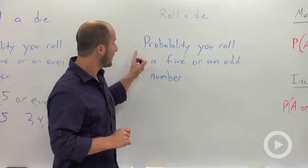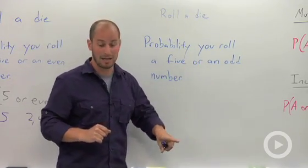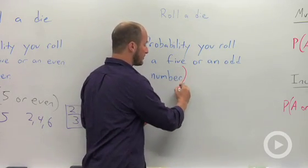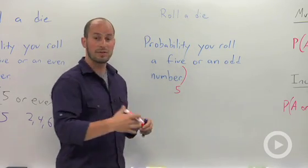And so for this one what we're looking at is a five or an odd number. So to roll a five, obviously we can just roll a five. And to roll an odd,